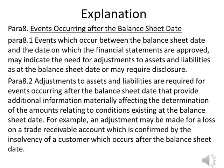Paras 8. Events Occurring After the Balance Sheet Date. Paras 8.1: Events which occur between the balance sheet date and the date on which the financial statements are approved may indicate the need for adjustments to assets and liabilities as at the balance sheet date or may require disclosure. Paras 8.2: Adjustments to assets and liabilities are required for events occurring after the balance sheet date that provide additional information materially affecting the determination of the amounts relating to conditions existing at the balance sheet date. For example, an adjustment may be made for a loss on a trade receivable account which is confirmed by the insolvency of a customer which occurs after the balance sheet date.